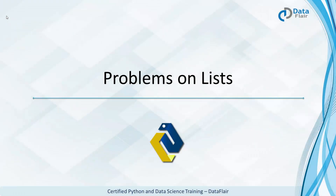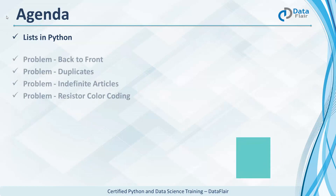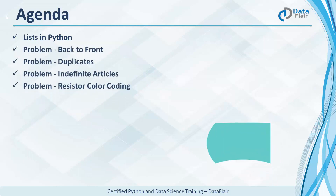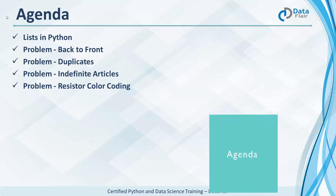Problems on Lists. Let's first do a quick revision on lists, then we'll solve problems like back-to-front, duplicates, indefinite articles, and resistor color coding.